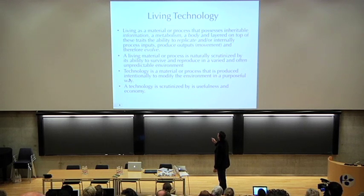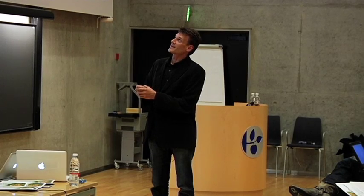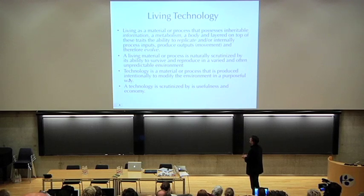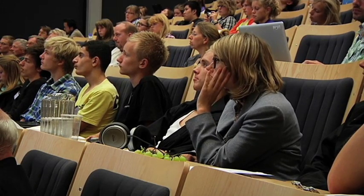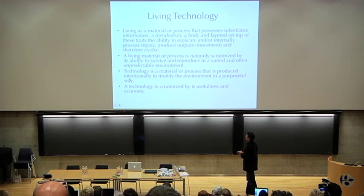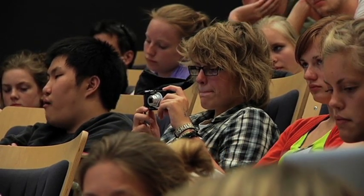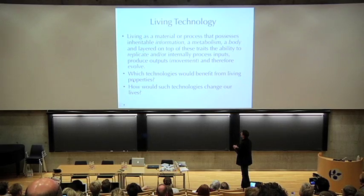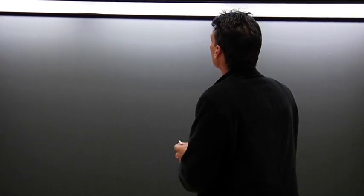Since this is a living technology session: 'living' is a material or process that possesses inheritable information, metabolism, body, movement, and therefore evolution — scrutinized by ability to survive and reproduce in a varied and often unpredictable environment. 'Technology' is a material or process produced intentionally to modify the environment in a purposeful way, scrutinized by its utility and economy. The major question of this whole evening is: which technologies would benefit from living properties? We're putting living properties into non-living material systems — so which technologies would you like to see with living properties, and how would these change our lives?